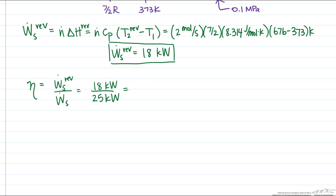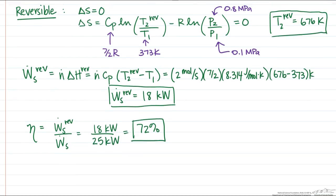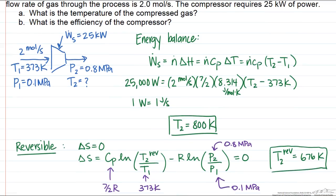So here we see that the strategy in this problem is to first calculate the outlet temperature as given by part A, and it's 800 Kelvin.